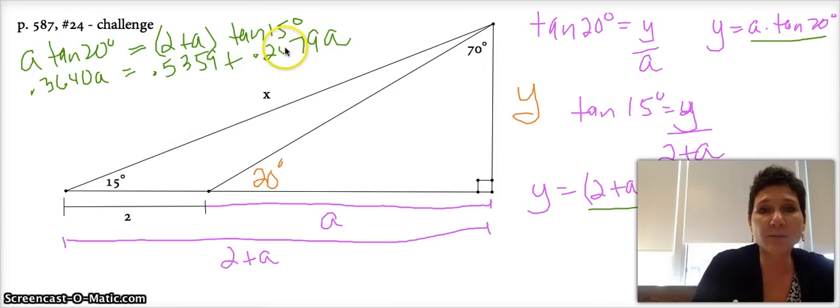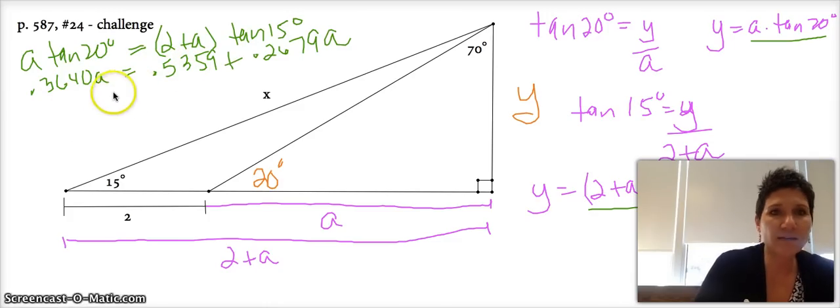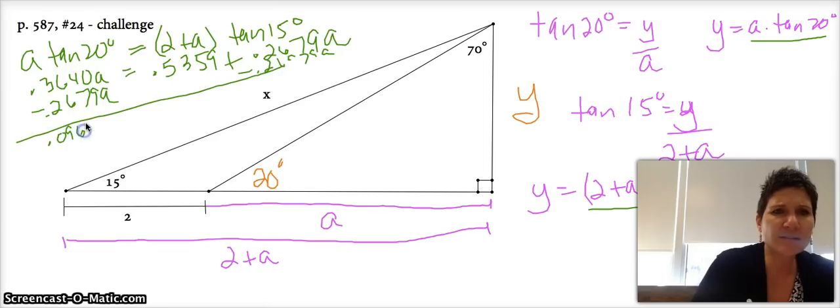This is an algebra 1 problem, so I'm going to subtract 0.2679 from both sides. So if you do minus 0.2679 A, this gives me 0.0961 A is equal to 0.5359. So if I divide both sides by this guy, don't forget you have to use your decimals and your calculator so let's not lose sight of what's going on here. You wind up with A equaling 5.576, so A is equal to 5.576.